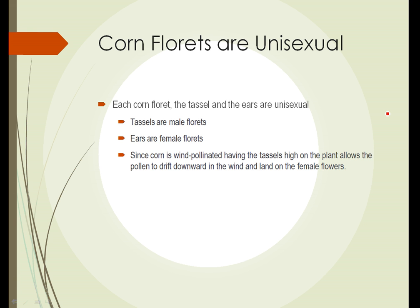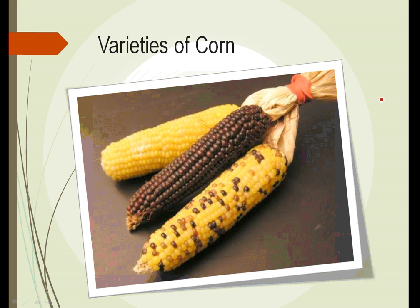Corn has separate male and female flowers or florets — the tassel and the ears, each unisexual. The tassel is male, the ears are female, and being wind-pollinated, the pollen drifts down hitting other corn plants. Corn is an interesting plant in that it was developed from other plants that are fairly edible, and without human intervention, corn can't multiply and grow by itself. If humans stopped taking care of corn, within a couple of years we would have no more corn left on the planet.